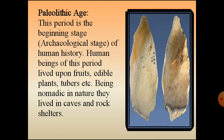Human beings of this period lived upon fruits, edible plants, tubers, etc. Being nomadic in nature, they lived in caves and rocks. Before, people didn't know how to live. When they understood that they should eat something, they learned to eat fruits, edible plants, and tubers. This Paleolithic stage is also called the Stone Age.